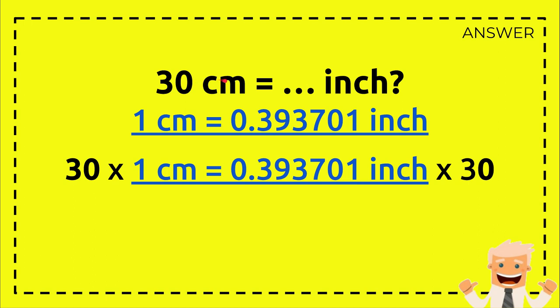Since it doesn't make sense to multiply a value with a measurement unit directly, we need help from the formula. Now because we have 30 here, we need to put 30 here as well.